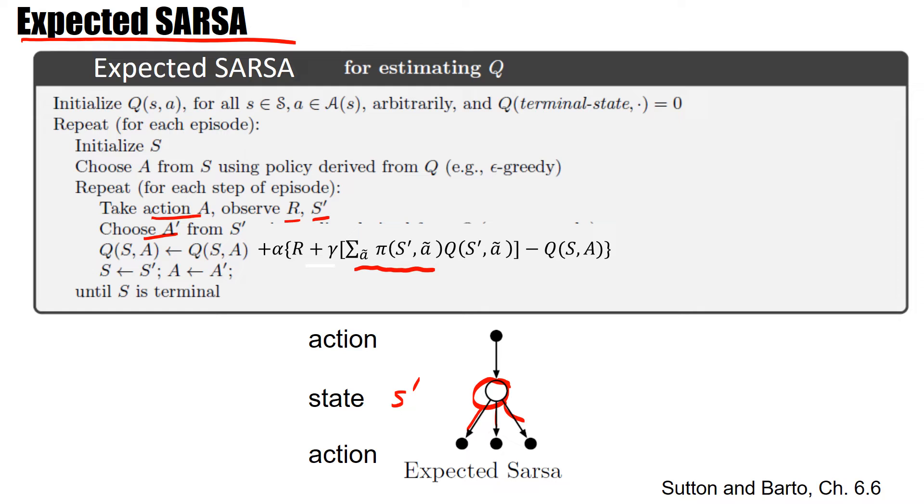So A tilde is a dummy variable of which we sum over, and P, the policy, is a weighting factor. And so for the updating, I don't use the real policy. The real policy is, of course, in the next step I take one specific action. But for the update, I take the average. That's why it's called Expected SARSA.